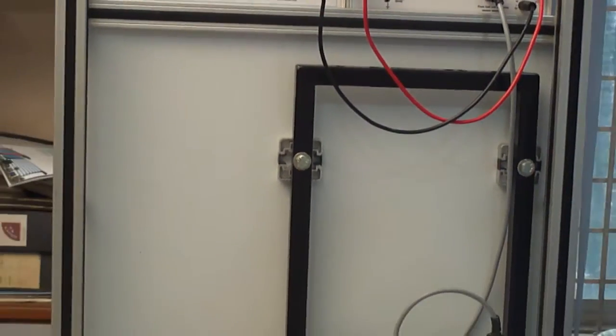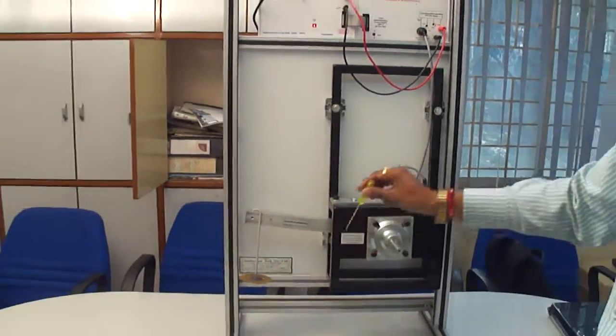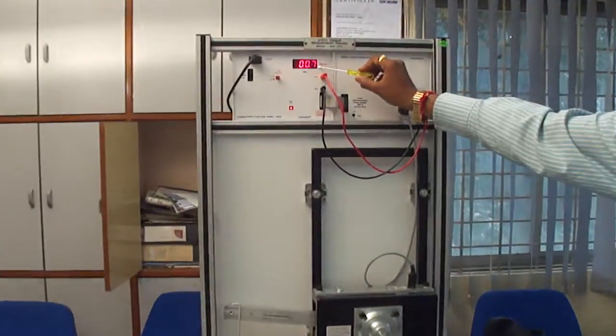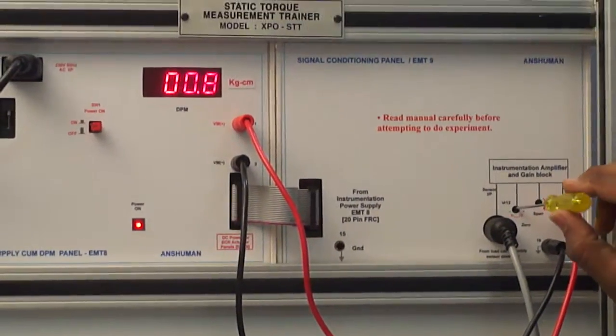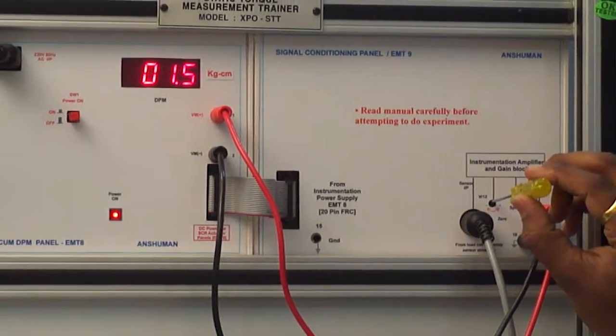When there is no weight on this pan, adjust zero hold on this display by using this zero preset. See the display?